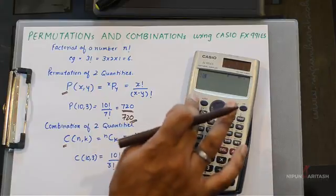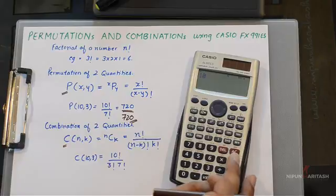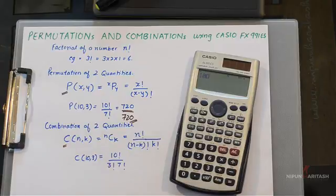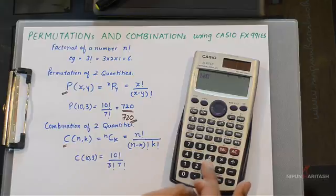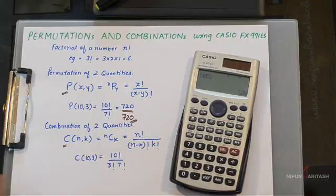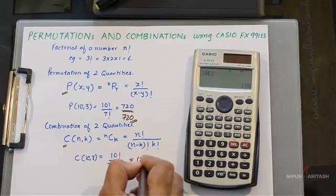That will be 10 shift and then divide button whose alternate function is combination of course. And then you write 3. So this is 120.